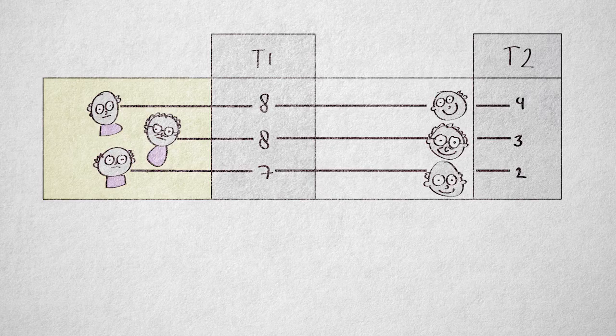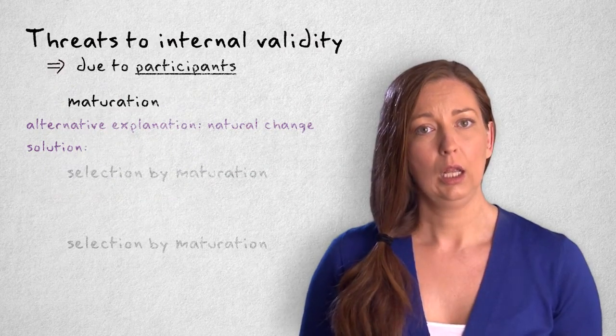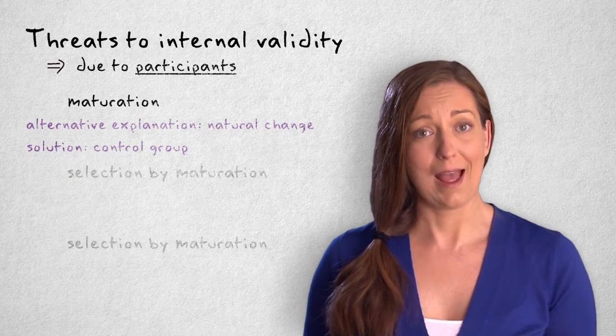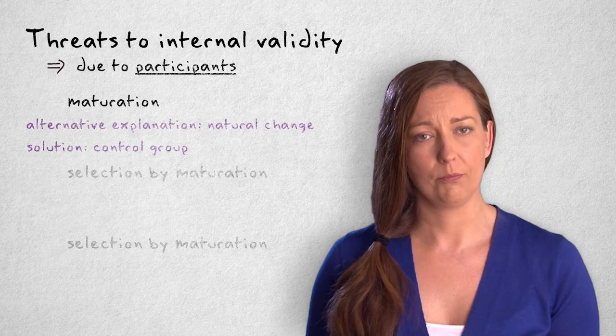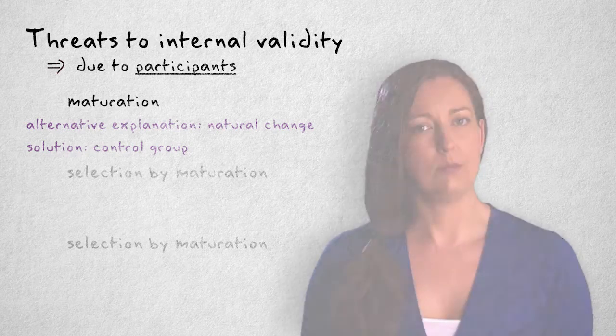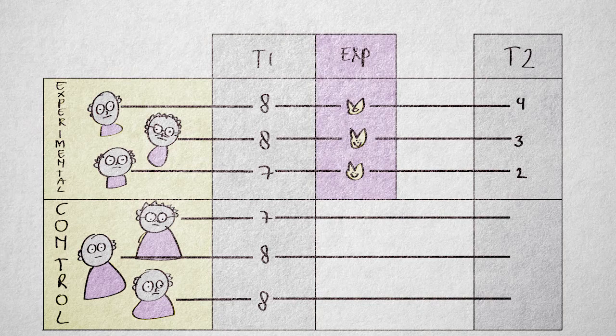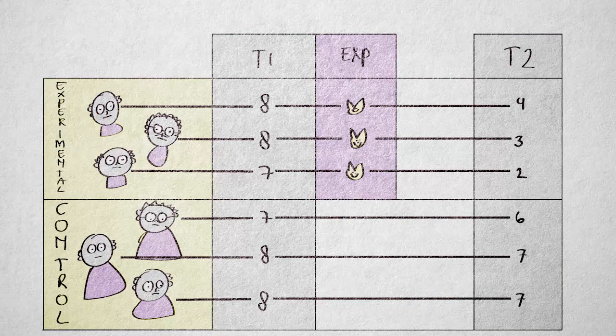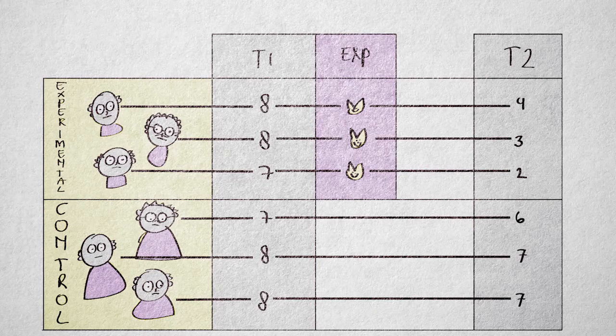Fortunately, there's a way to eliminate this alternative explanation of natural change that we refer to as maturation. We can introduce a control group that is measured at the same time but is not exposed to the hypothesized cause. Both groups should mature or change to the same degree. Any difference between the groups can now be attributed to the hypothesized cause and not natural change. The threat of maturation is eliminated, but unfortunately, a study that includes a control group is still vulnerable to other threats to internal validity.